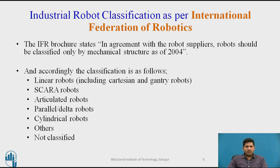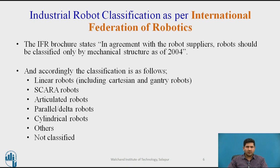As per the International Federation of Robotics, robots are classified based on mechanical structure: linear robots (Cartesian, gantry), SCARA robots, articulated robots, parallel robots, cylindrical robots, and others. This classification doesn't include spherical configuration, which is now obsolete. However, many textbooks include it, so it is part of today's discussion.